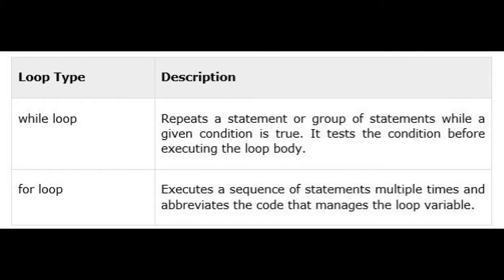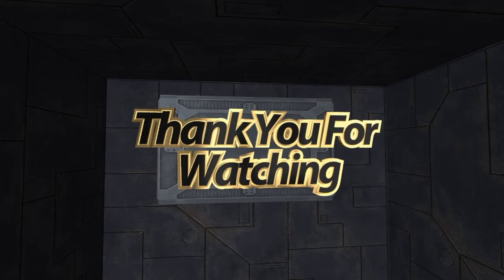C programming language provides the following types of loops to handle looping requirements. While loop repeats a statement or group of statements while a given condition is true. It tests the condition before executing the loop body. For loop executes a sequence of statements multiple times and abbreviates the code that manages the loop variable.